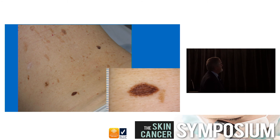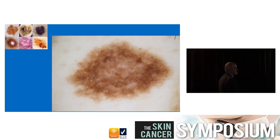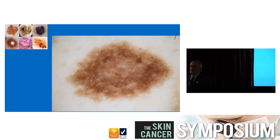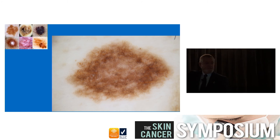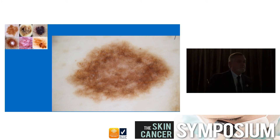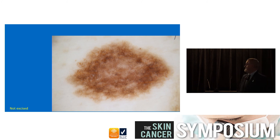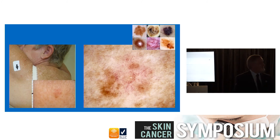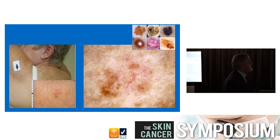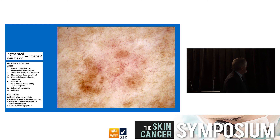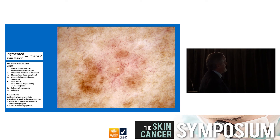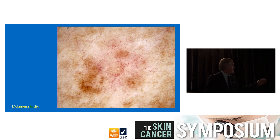Is this lesion one of the five benign things? Is it pigmented? Is it chaotic? Has it got clues to malignancy? It has a structured area here and a large area without any structure predominating - that's eccentric. It also has a polymorphous vessel pattern including dots. It's a melanoma in situ.